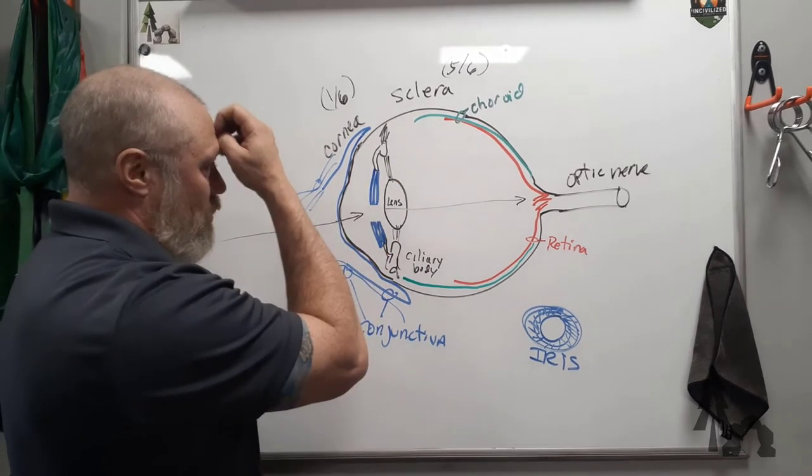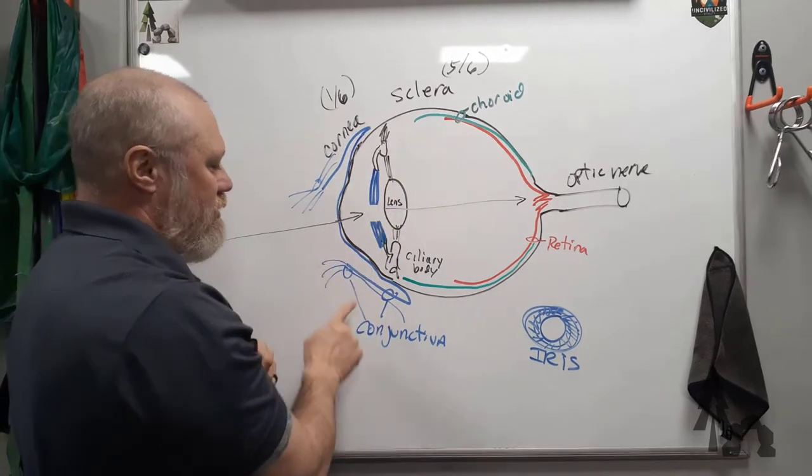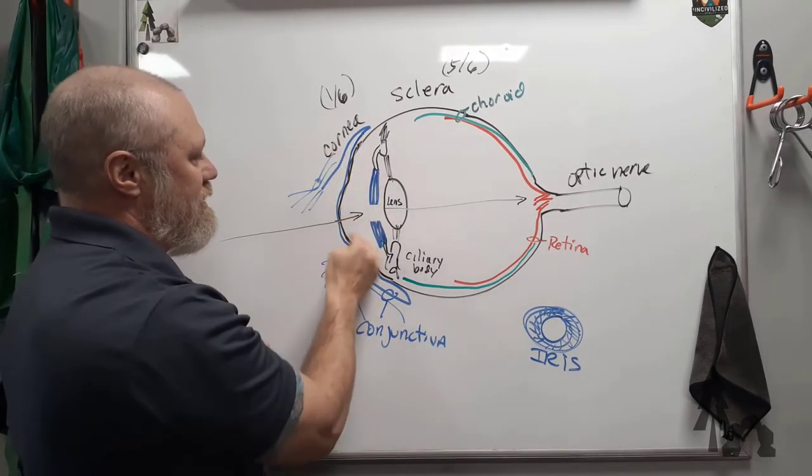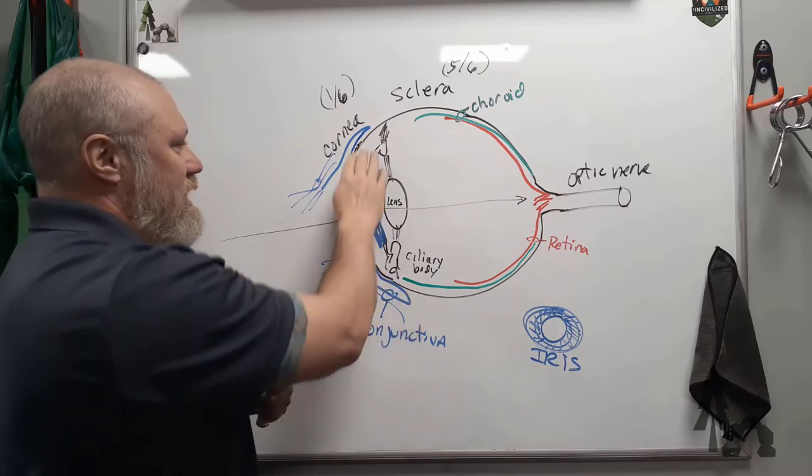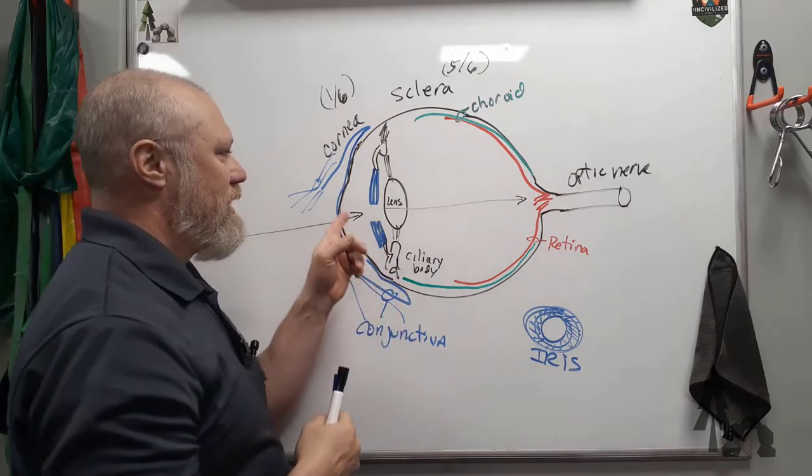So, the fluid up here under the cornea, in this little area, this transparent part, which is all deep to the conjunctiva between the lids, this is the anterior chamber, aqueous humor.